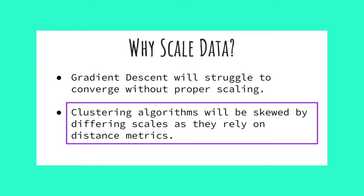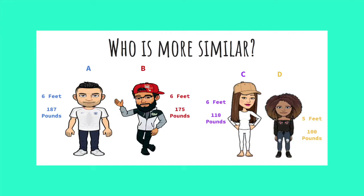The second reason we need to scale our data is distance metrics will be skewed by differing scales. This will ruin any attempts at proper clustering. This example will help illustrate that fact. We would like to compare people's heights and weights. You can see we have person A, B, C, and D with their height and weight listed. We want to decide whether A and B are more similar, or whether C and D are more similar. What do you think?